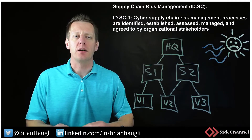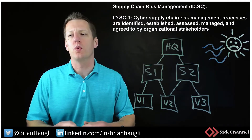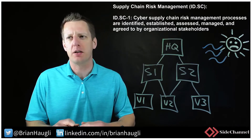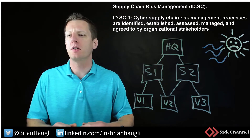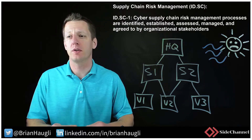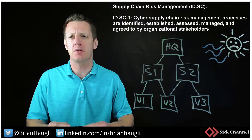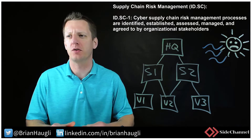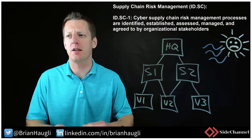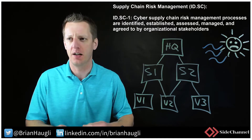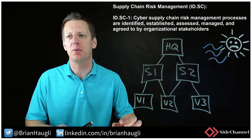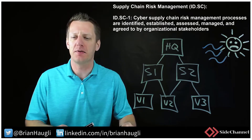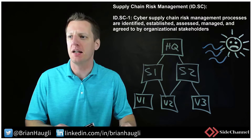A new category in version 1.1 is Supply Chain Risk Management, ID.SC. The organization's priorities, constraints, risk tolerances, and assumptions are established and used to support risk decisions associated with managing supply chain risk. The organization has established and implemented processes to identify, assess, and manage supply chain risks.